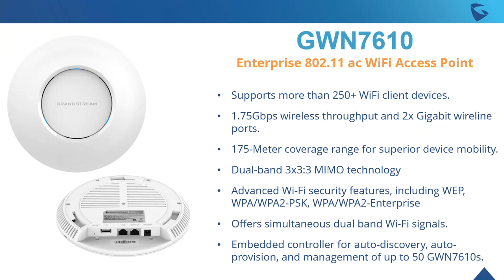First, our GWN 7610 — this was our first wireless AP and we were pretty excited when we came out with it. It's our enterprise-grade 802.11ac Wi-Fi access point, supporting up to about 250 Wi-Fi clients, 1.75 gigabit per second wireless throughput with 2x gigabit wireline ports, 175-meter coverage range, dual-band 3x3 MIMO technology, advanced security features, and simultaneous dual-band Wi-Fi signals.